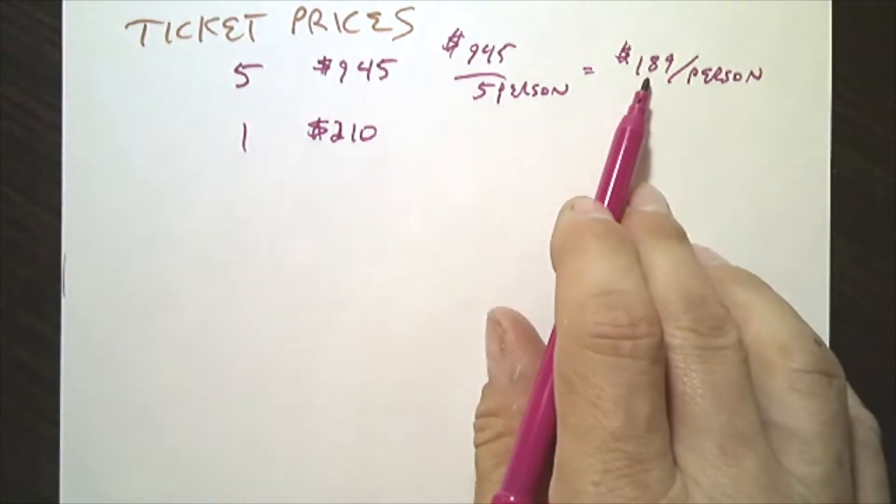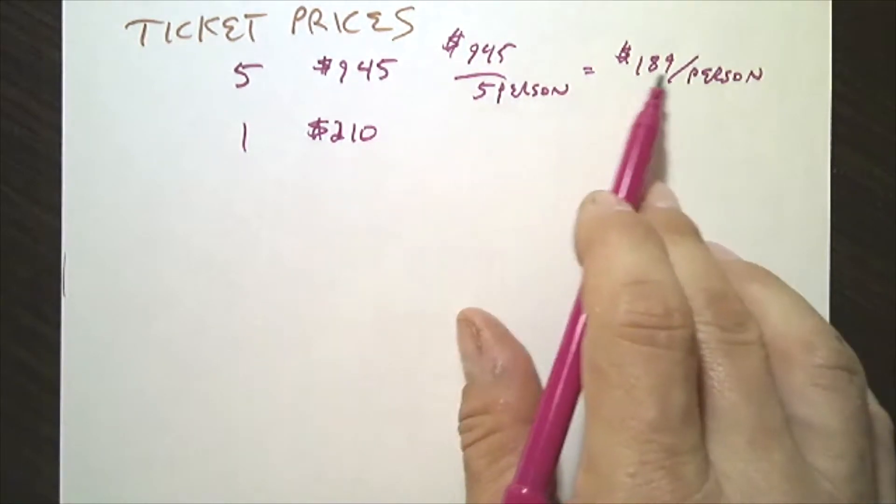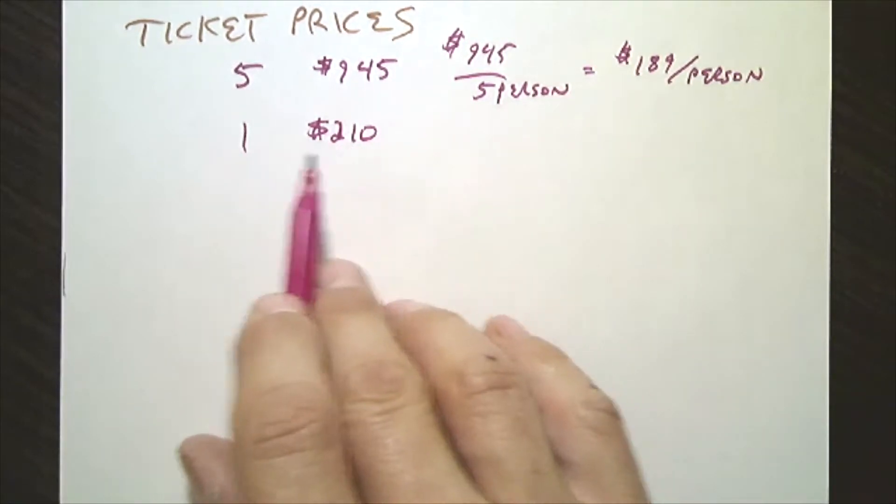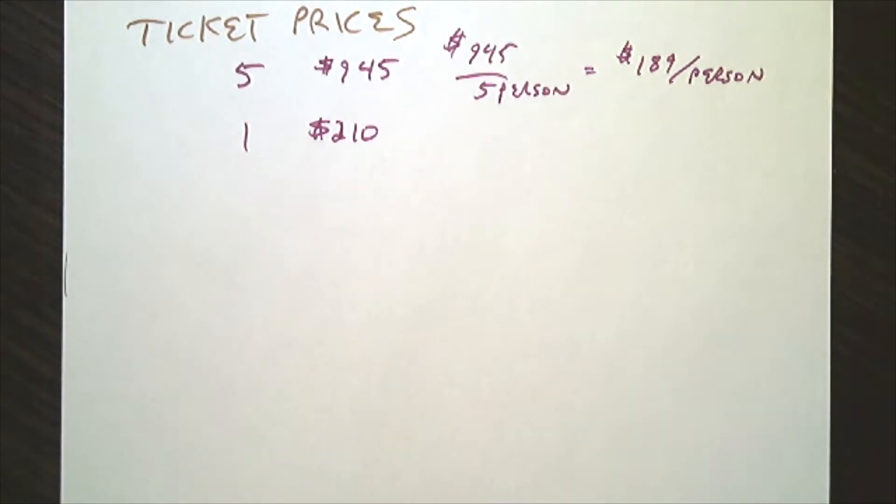Notice the difference between the two. So the travel agent requested $189 per person, and then for the sixth one, $210. Pause the video and try to think about why that would happen.